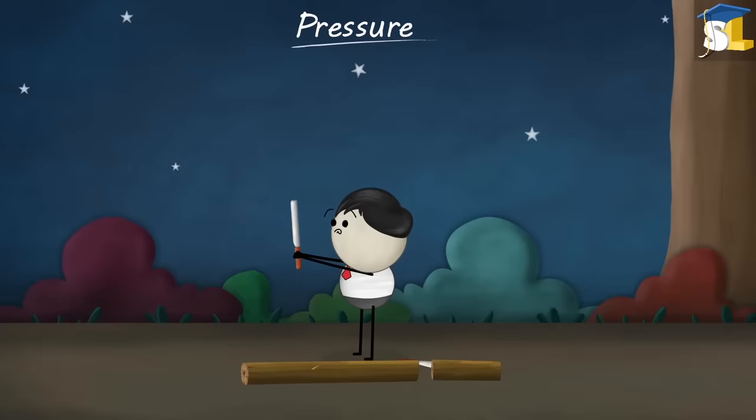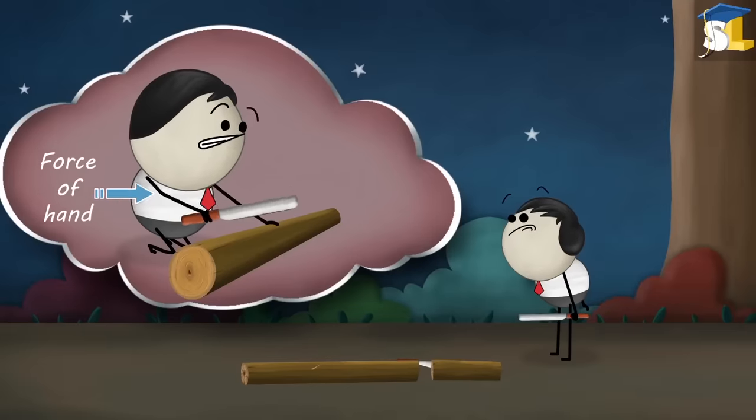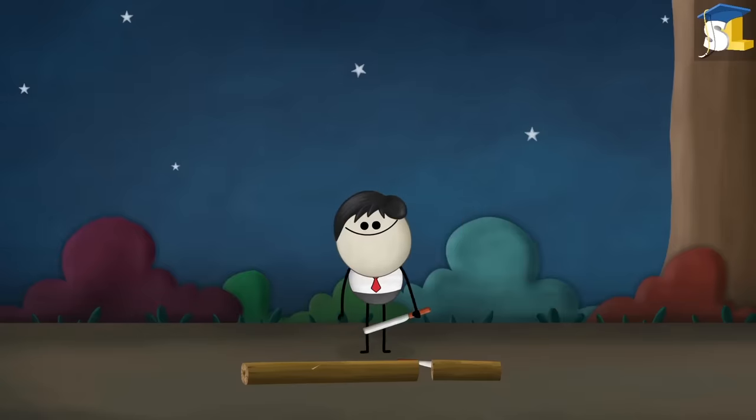This is because the area on which the force acted was different. In the case of a blunt knife, the cutting edge is thicker. That means the area is larger. As a result, the force of our hand falls over a larger area of the knife, producing less pressure. Hence, it is difficult to cut with a blunt knife.